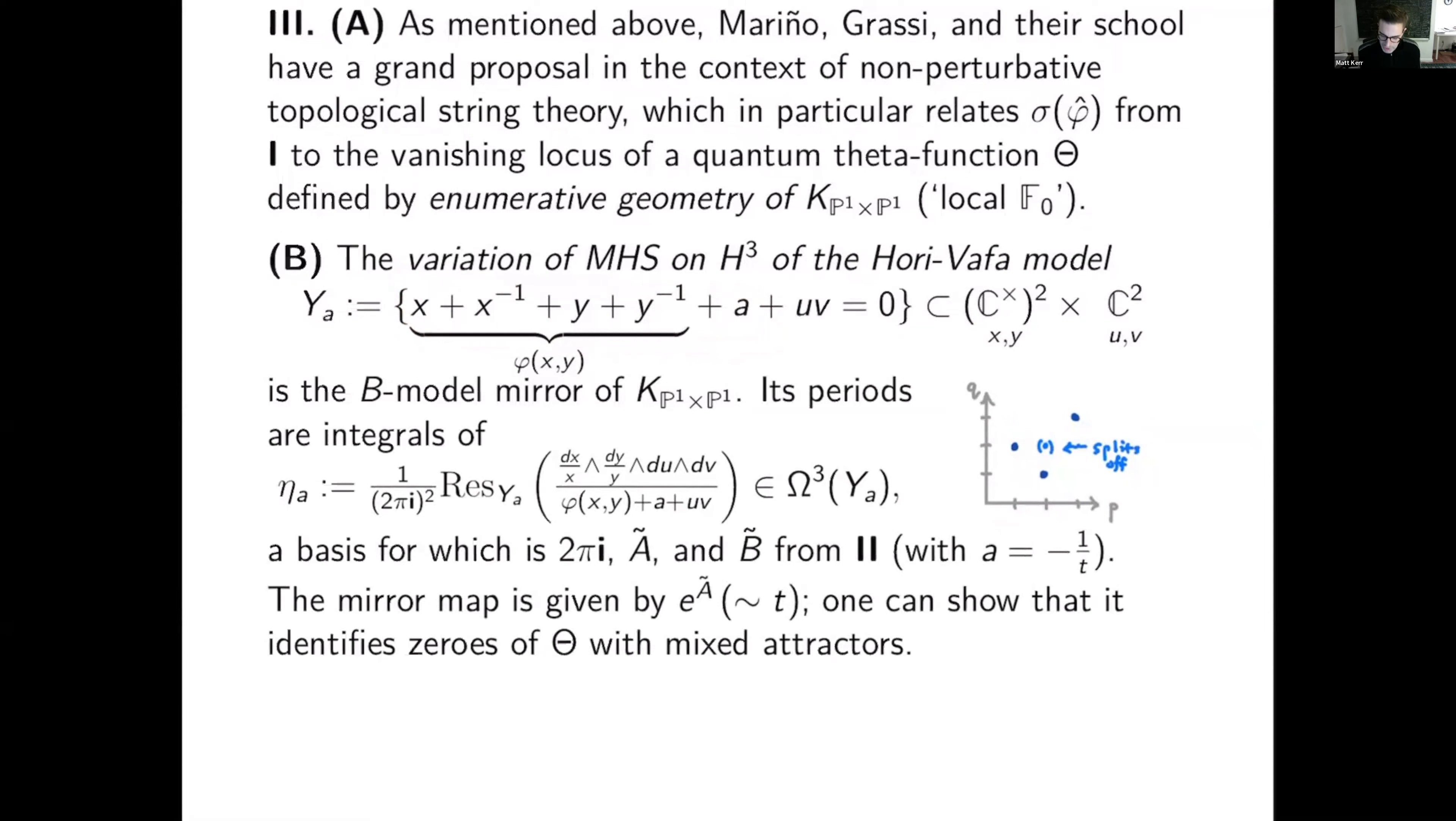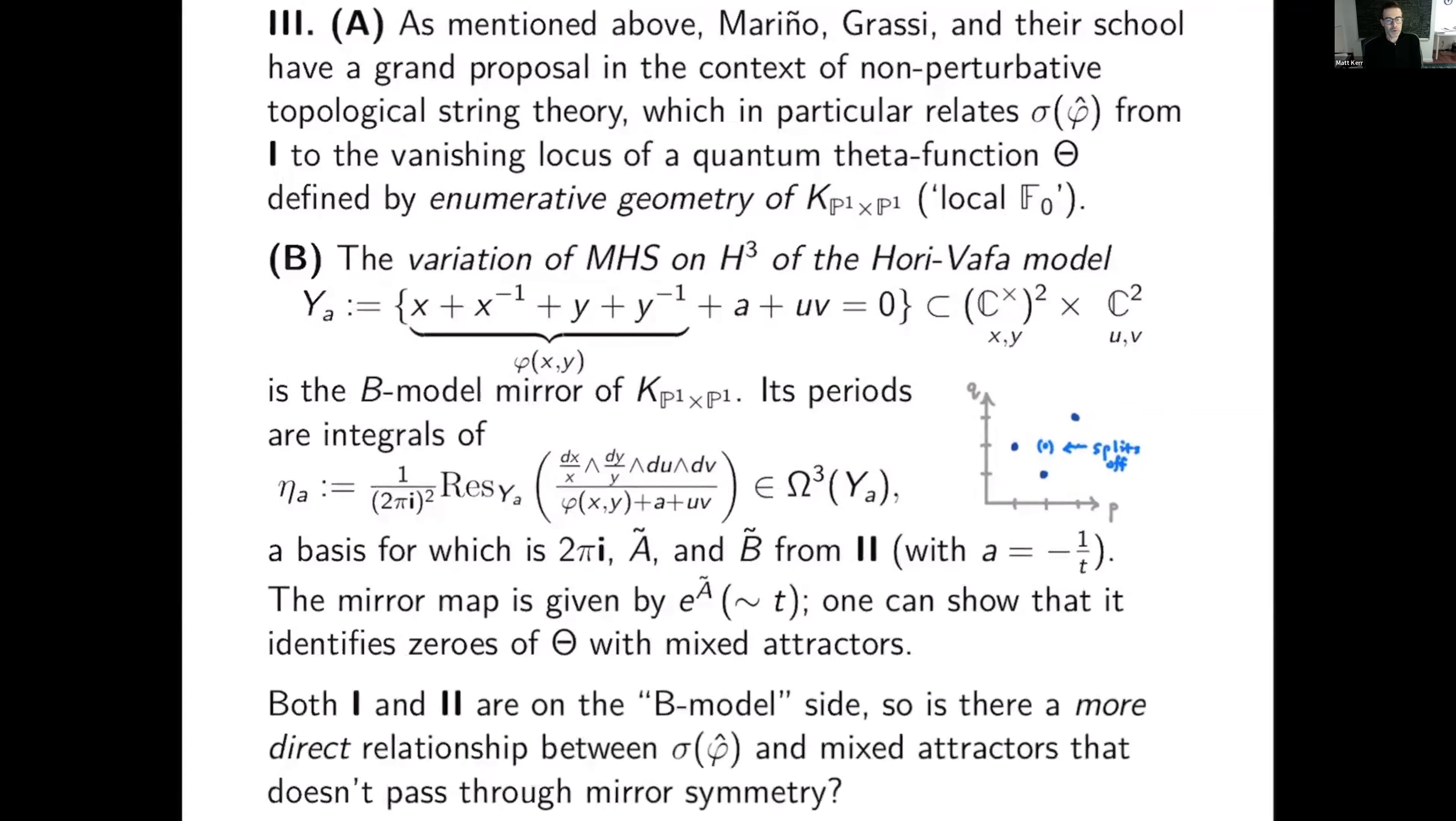So its periods are integrals of the three forms shown there. And a basis for that is none other than 2 pi i, a tilde, and b tilde from part two, where you identify little a with minus 1 over t. The point here is that there's an isogeny between the elliptic curve phi plus a equals zero and the Legendre curve. And the mirror map is given by e to the a tilde. And one can show that that identifies zeros of theta, the quantum theta function, with mixed attractors.